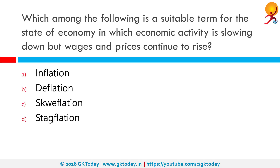Which among the following is a suitable term for the state of an economy in which economic activity is slowing down but wages and prices continue to rise? The correct answer is stagflation. Stagflation refers to persistent high inflation coupled with high unemployment and stagnant demand or growth in the economy — high inflation plus low economic growth plus low employment generation equals stagflation.